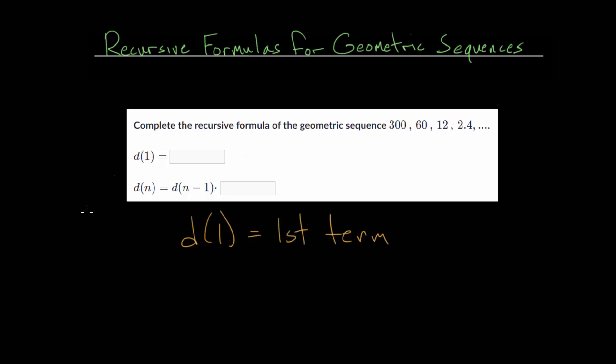And then we're going to be given the pattern. So to find the nth term we'll take the term before it, so d(n-1), and then we'll multiply by r. And r, remember, is our common ratio. It's the number we're multiplying by to go from one term to the next.